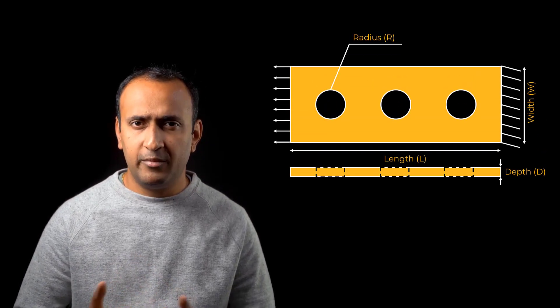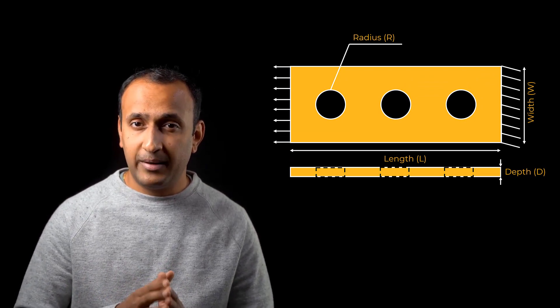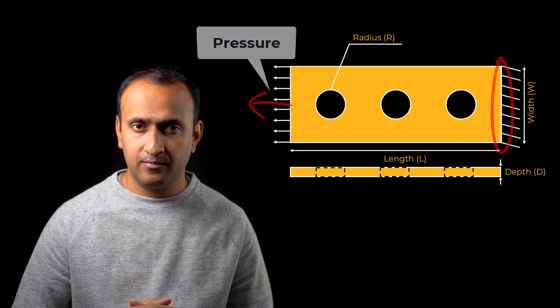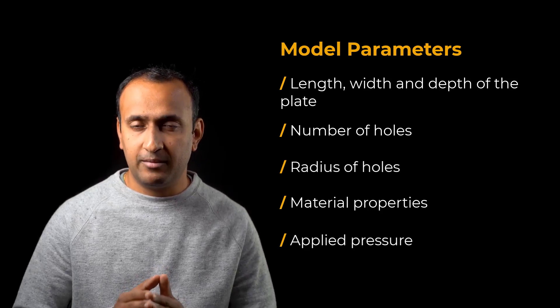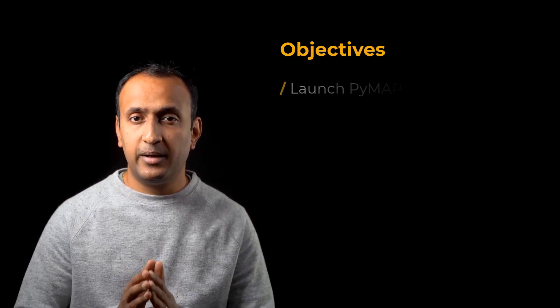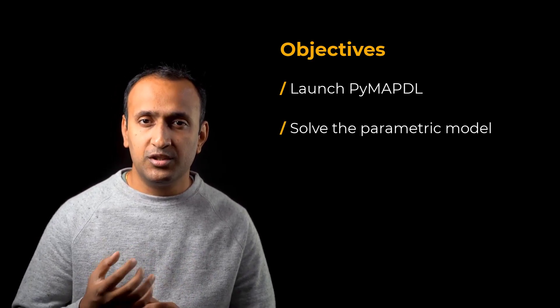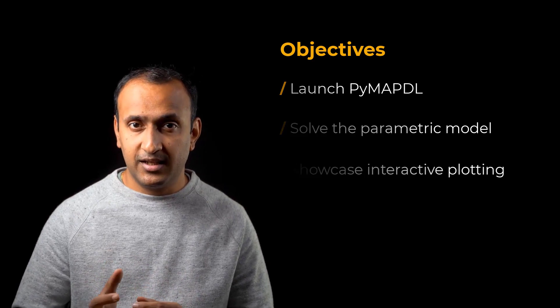Now let's begin the workshop where we launch a PyMAPDL instance and run a program. In this demo, we'll set up a parametric model of a rectangular plate with multiple holes. The plate is modeled as a 3D solid so the thickness can be parametrized. One end is fixed and a pressure load is applied on the other end. The dimensions, number of holes, hole radius, material properties, and applied pressure are all parametrized. The learning objectives are to launch PyMAPDL on a local machine, solve the parametric model, and demonstrate interactive plotting of geometry, mesh, and results.